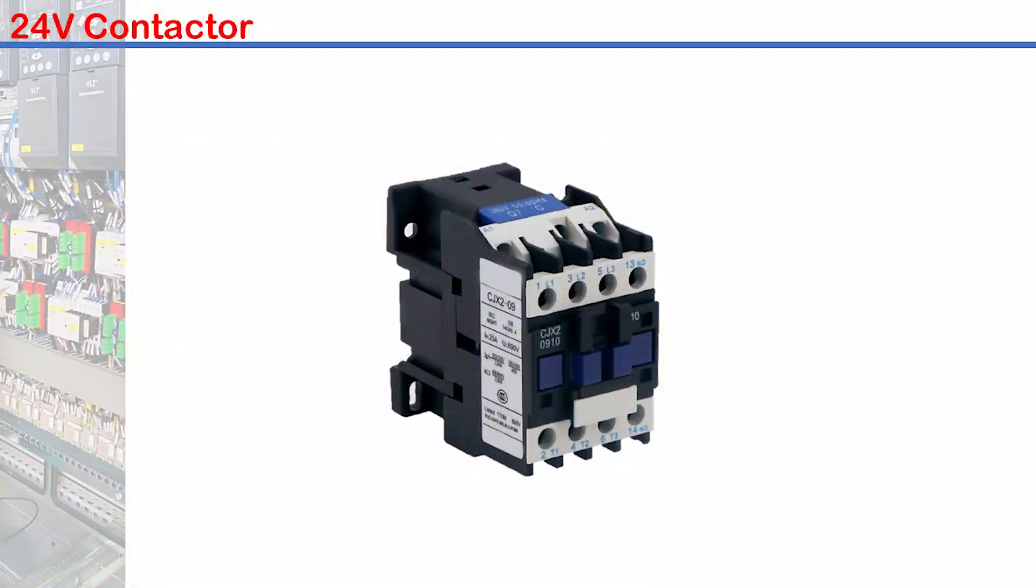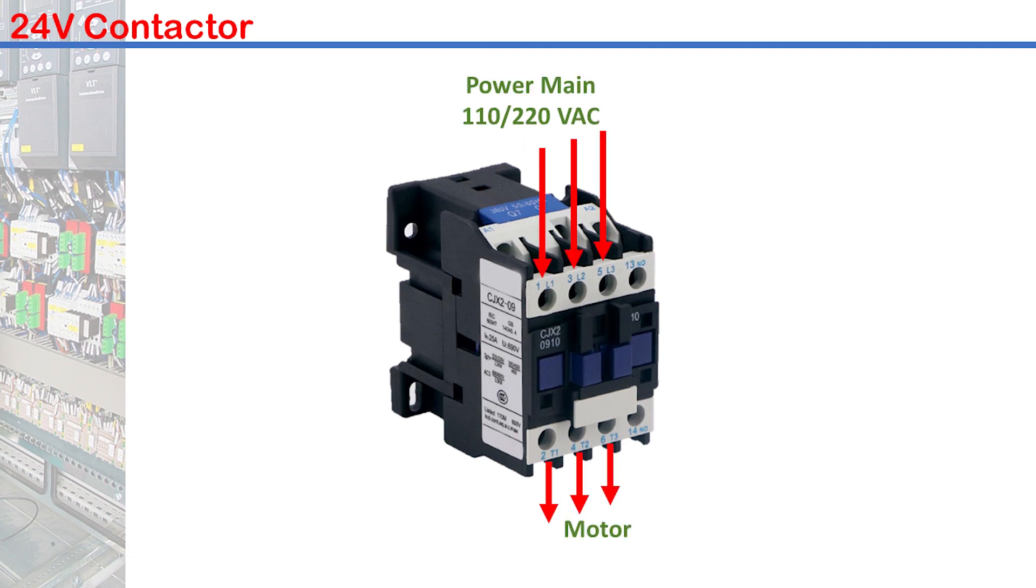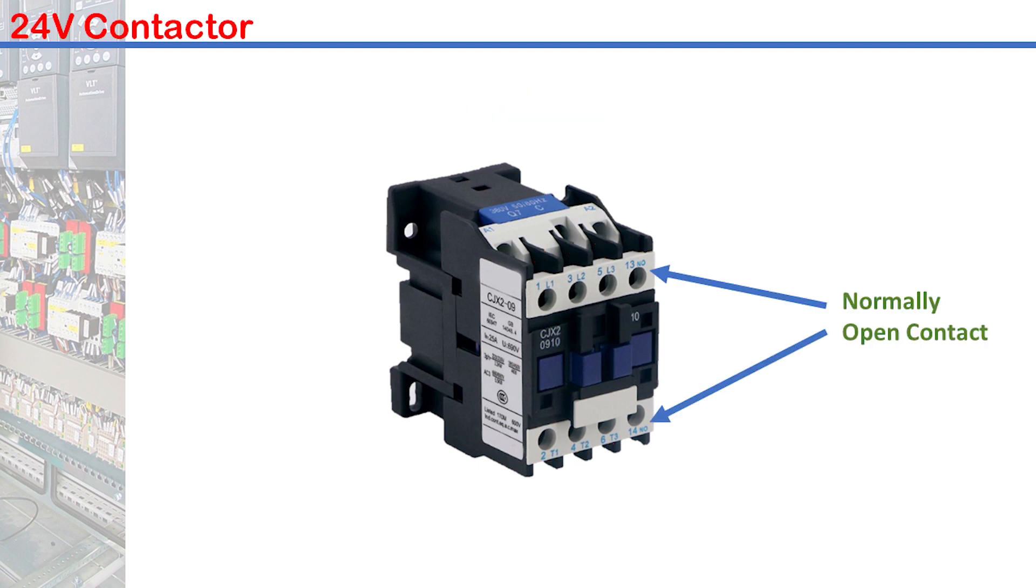Let's go a step further to see how we can start and stop AC motors with a contactor. This contactor input is 24V. 110 or 220V AC, single or three-phase motors connect to the power main with these terminals. These normally open terminals will provide status signal to the controller as will be seen in part 2 of this video.